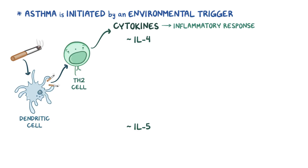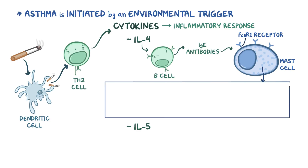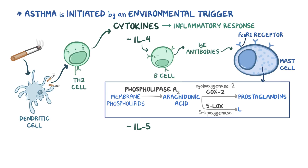IL-4 is especially important because it leads to the production of IgE antibodies by B cells, and these antibodies bind to FcεRI receptors on mast cells to activate them. These mast cells use an enzyme called phospholipase A2 to take membrane phospholipids and make a 20-carbon polyunsaturated fatty acid called arachidonic acid. Arachidonic acid is then metabolized by two important enzymes: cyclooxygenase-2 (COX-2), which makes prostaglandins, and 5-lipoxygenase (5-LOX), which makes leukotrienes.